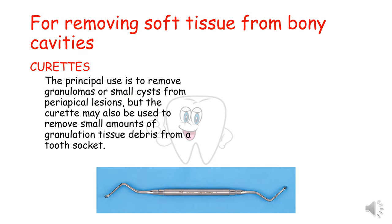Now let's talk about the instruments used for removing soft tissue from the bony cavities after extraction is completed. They are called curettes. The principle use is to remove granulomas or small cysts from periapical lesions, but curettes may also be used to remove small amounts of granulation tissue debris from the tooth socket.